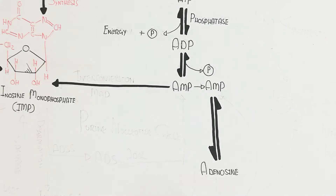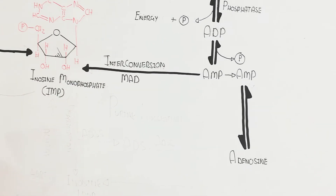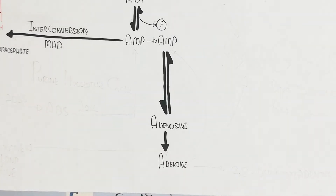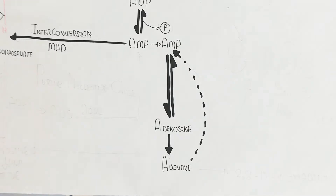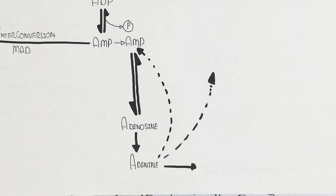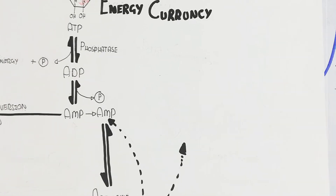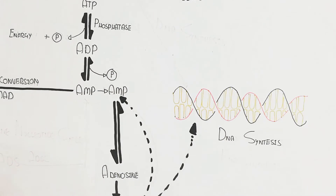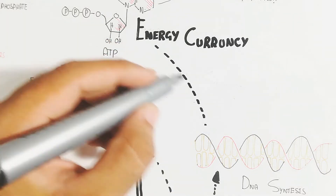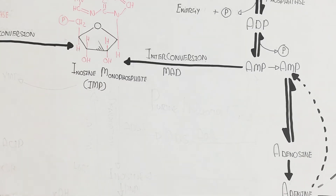Adenosine is further converted into adenine, while the interconversion via enzyme activity can regenerate adenosine monophosphate from ATP. Adenine is used for both AMP production and DNA synthesis, as it is a nitrogenous base. Adenine is required during DNA replication in mitosis and meiosis, and can also convert into 2,8-dihydroxyadenine.